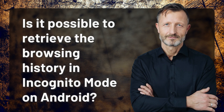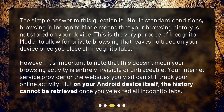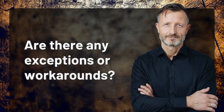Is it possible to retrieve the browsing history in incognito mode on Android? The simple answer is no. In standard conditions, browsing in incognito mode means that your browsing history is not stored on your device — this is the very purpose of incognito mode. However, it's important to note that this doesn't mean your browsing activity is entirely invisible or untraceable. Your internet service provider or the websites you visit can still track your online activity, but on your Android device itself, the history cannot be retrieved once you've exited all incognito tabs.